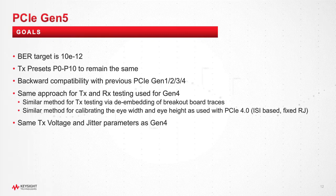We've got a lot of good pathfinding work that points to that assumption proving out pretty well. Also, the same transmitter voltage and jitter parameters as Gen 4, so that makes the test methods used for testing the transmitters very similar to what we did with PCI Express 4.0, just with different limits.